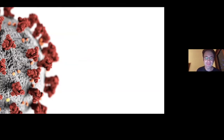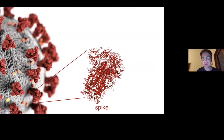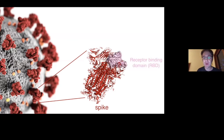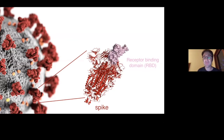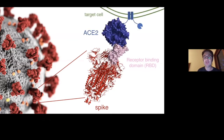This is an image of a SARS-Coronavirus, and on the surface of this virus are these spike proteins, which mediate viral entry into cells. One part of the spike protein is the receptor binding domain, shown here in pink. This receptor binding domain can adopt two major conformations: the down conformation and the up conformation. When it's in the up conformation, it can engage the ACE2 receptor on cells and mediate viral entry.